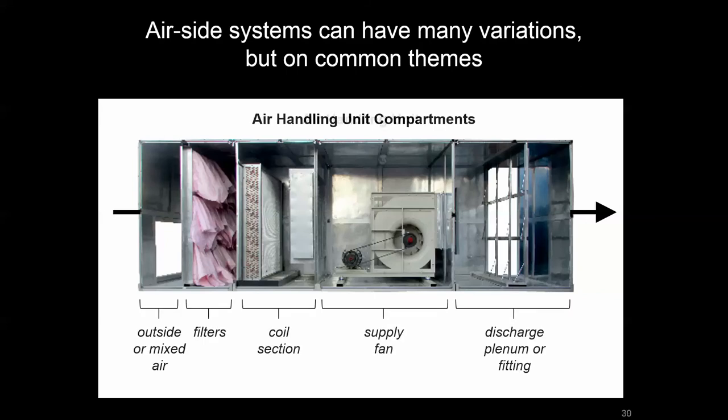This is what it might look like on the inside. There will be many variations, but typical components include: a chamber or plenum where outside air comes in and possibly mixes with recirculated return air; filters designed to protect equipment such as coils and fans, as well as provide air filtration for indoor environmental quality; a single coil or combination of coils for load management with that mixed air; a supply fan — in this case a belt-driven squirrel cage or centrifugal fan — and then a plenum or fittings to connect to the main supply duct.